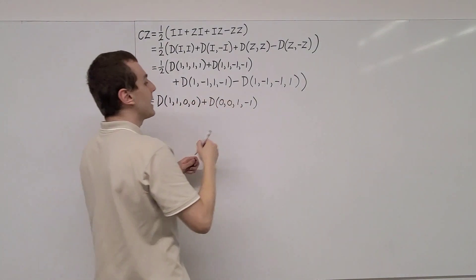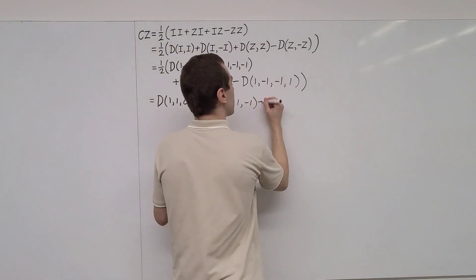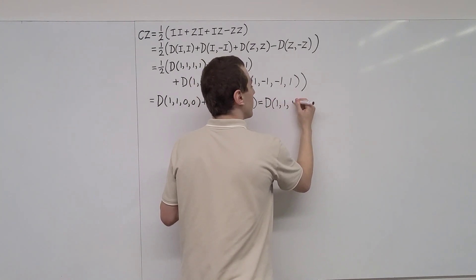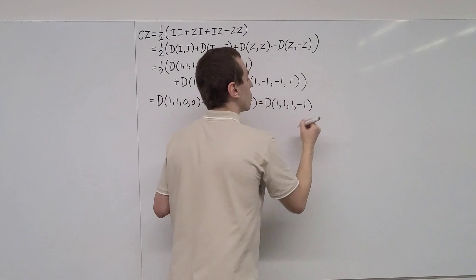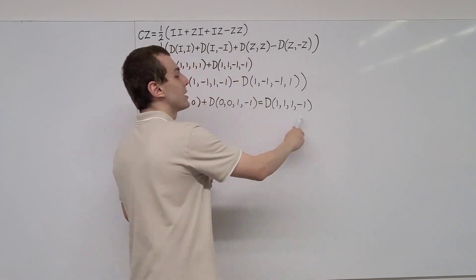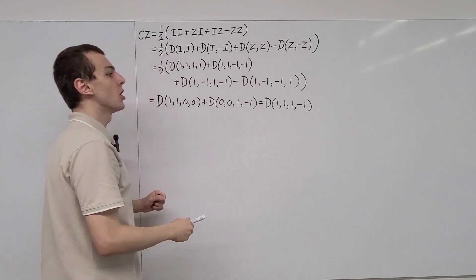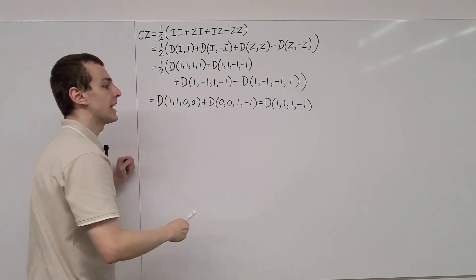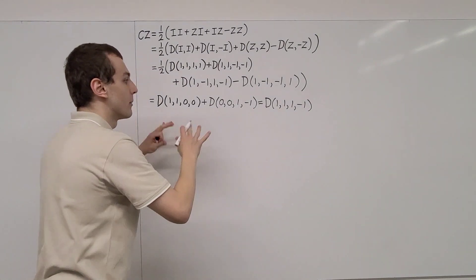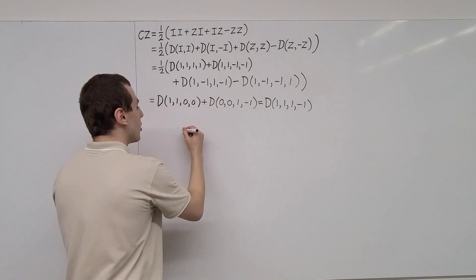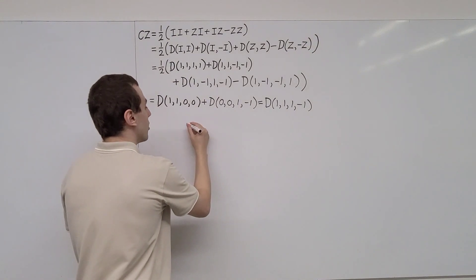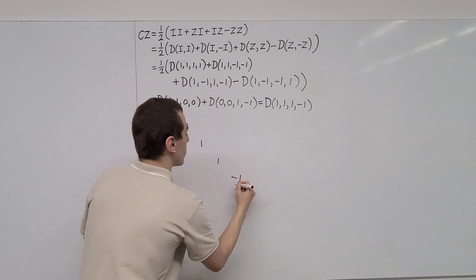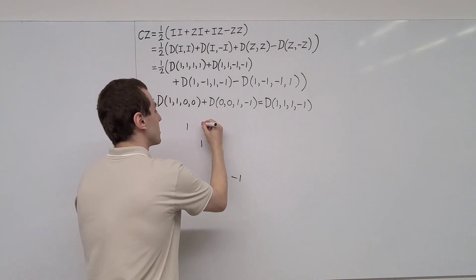Adding the two resulting diagonal matrices together gives us a diagonal matrix with entries 1, 1, 1, and minus 1. This is the matrix representation of the controlled Z gate. Writing this out in standard matrix notation, we have 1, 1, 1, and minus 1 along the diagonal, and zeros everywhere else.